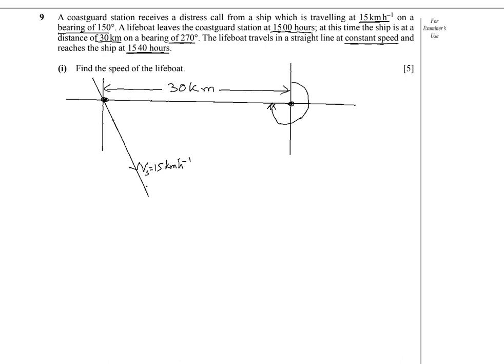Let's complete the diagram by connecting these two points — the position of the lifeboat and the end of the velocity vector. The boat will come along this line to reach the ship. Let's mark some letters on the triangle: the position of the ship with letter M, the position of the lifeboat with letter N, and their meeting point with letter O.